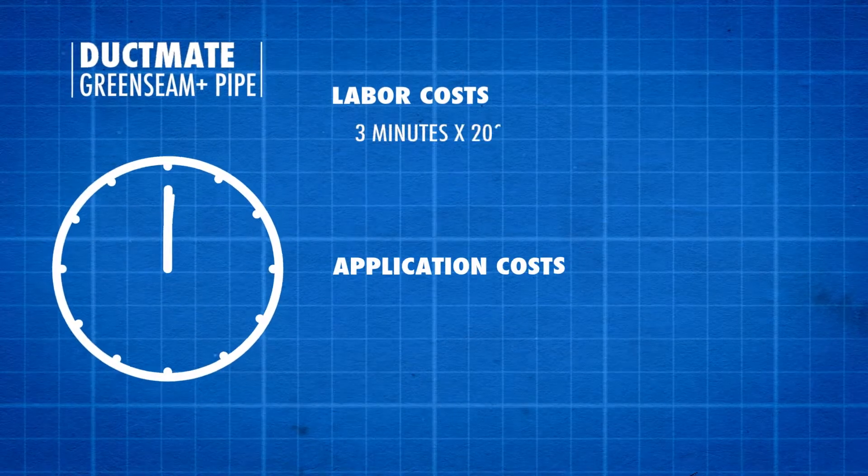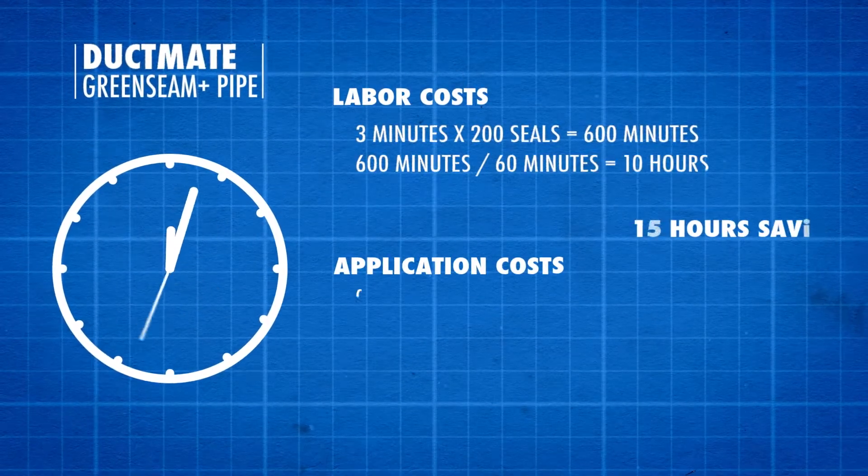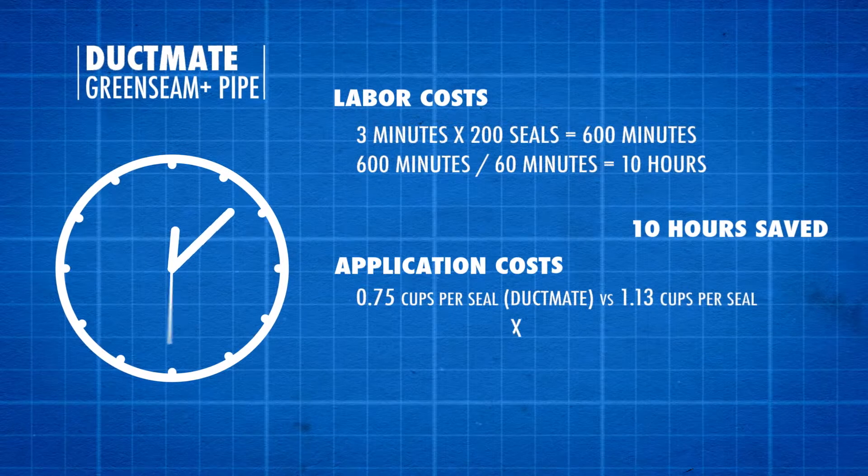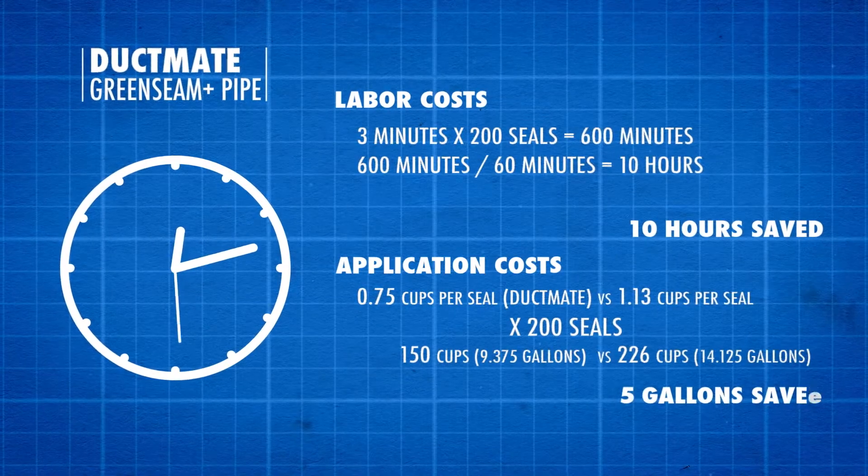Time studies have shown that it takes two and a half minutes on average to seal a single 8-inch, 5-foot section of pipe, and even longer with rectangular duct.